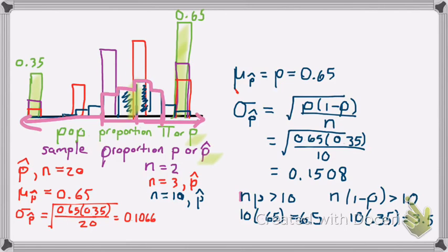We're still not sure on the shape, so I'm going to need to check n times p and n times 1 minus p to see if they are both greater than 10. This one I would be 20 times .65, so that would show that it was sufficiently large on this side because 13 is greater than 10, so I'm good on the positive side of the distribution.